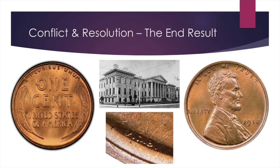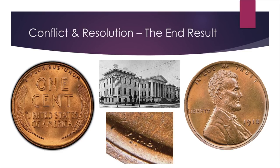No one knows exactly how it happened — some people think Barber caused the uproar and went behind Brenner's back, others thought it just didn't look good on the coin, and others genuinely didn't mind. Whatever the reason, on August 5th they stopped the presses. The San Francisco Mint only made about 484,000 of these coins, as opposed to 28 million for the 1909 VDB at the Philadelphia Mint.